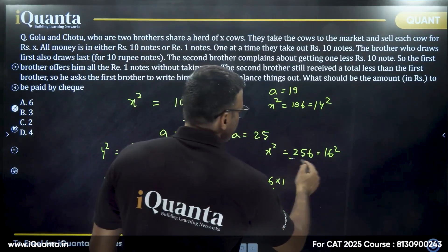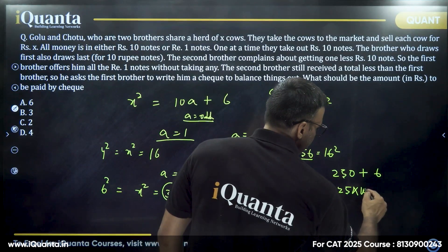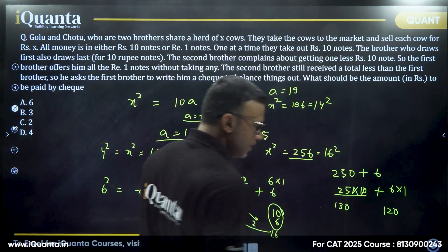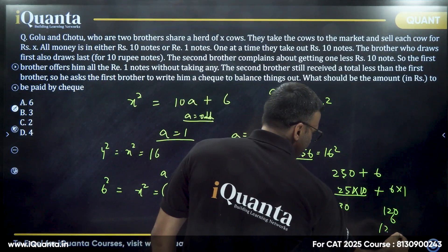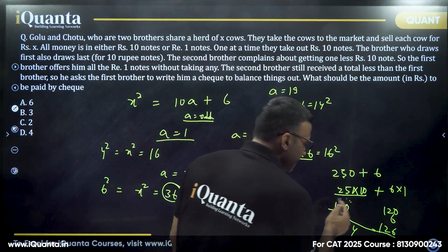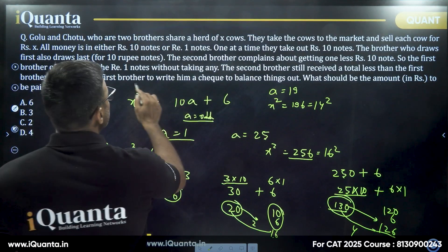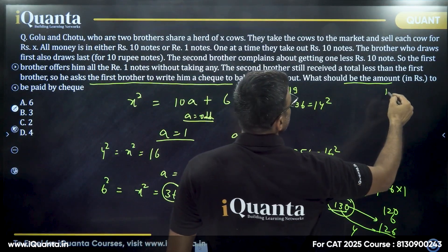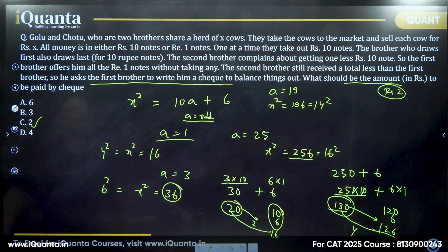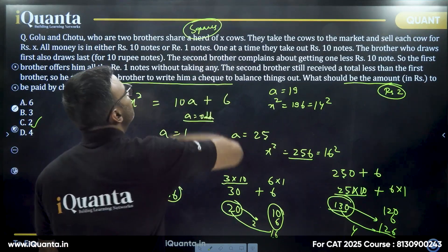Verifying with 256 (16 squared): that's 25 notes of 10 rupees and 6 notes of 1 rupee. Distributing 25 notes gives 130 to the first and 120 to the second. Even giving all 6 rupees to the second makes it 126 versus 130 — a difference of 4. So the first gives 2 rupees by check, making both 128. In any of these cases, the required check amount is exactly 2 rupees. The correct answer is Option C.